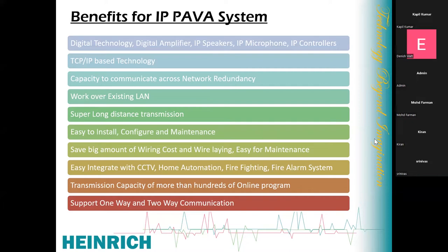Easy to install, configure, and maintain. You can install anywhere over your network and configure from a central location. You can monitor all your devices from the software from a single point — you don't need to physically go to the devices to check for faults. Any fault in any device will generate a notification in our central software. Additionally, a huge amount of wiring cost is saved because the system is installed over the existing LAN.